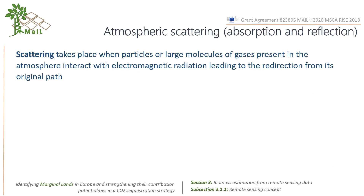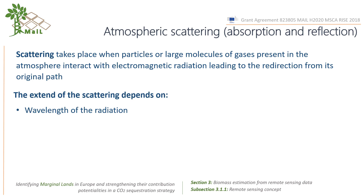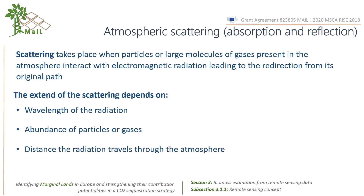Scattering takes place when particles or large molecules of gases present in the atmosphere interact with electromagnetic radiation, leading to the redirection from its original path. The extent of the scattering depends on the wavelength of the radiation, the abundance of particles or gases, and also on the distance the radiation travels through the atmosphere. Scattering can also lead to blurring of the targets in remotely sensed images due to spreading of the reflected radiation, resulting in a reduced resolution image.